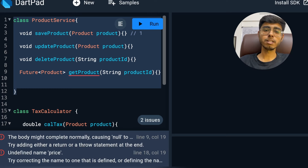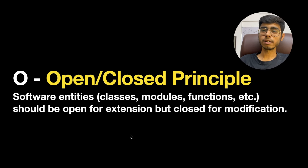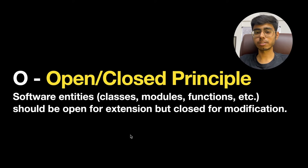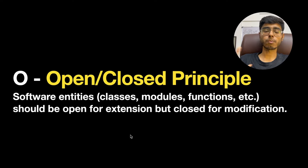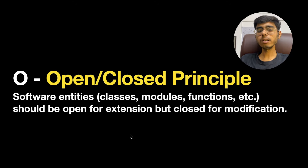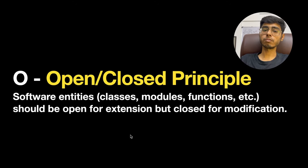Now the code is good and follows the Single Responsibility Principle. Make sure that whatever logical classes you create in your application follow SRP. Our next principle is O — the Open/Closed Principle. It states that software entities — classes, modules, functions — should be open for extension but closed for modification.